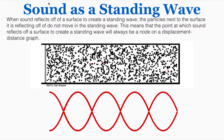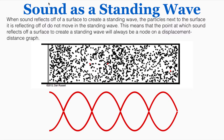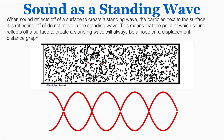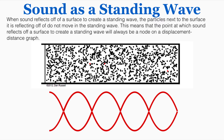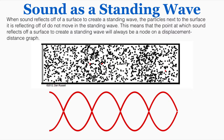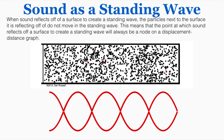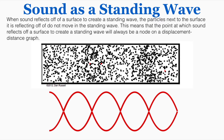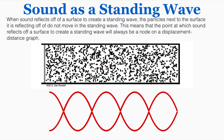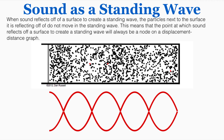When sound reflects off of a surface to create a standing wave, the particles next to the surface it's reflecting off of do not move in the standing wave. This means that the point at which sound reflects off a surface will always be a node on a displacement-distance graph. The particles at the very edge of that wall are being compressed and then pushing other particles back, but they themselves are not moving. So because they're not being displaced, they always make a node.